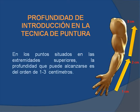Si hablamos de la profundidad de la introducción en la técnica de puntura correcta, los puntos situados en las extremidades superiores pueden alcanzar una profundidad en el orden de 1 a 3 centímetros: siendo 1 centímetro la región de la mano y muñeca, 2 centímetros muy próximo al codo, y 3 centímetros el muñón del hombro. Los criterios del tratante valen más que este parámetro.